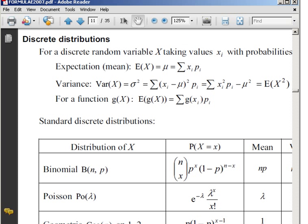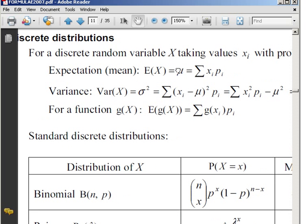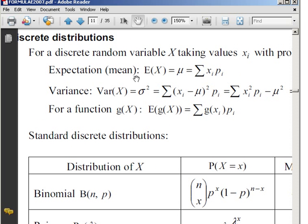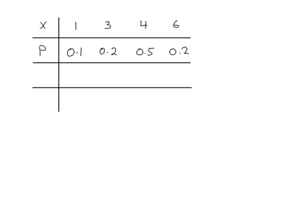To work out the mean, go to the formula book, page 11, and you have this formula here. In this formula you have to work out x times p, and then that sigma tells you to add those values together. So the mean is equal to the sum of all of the x times p values.